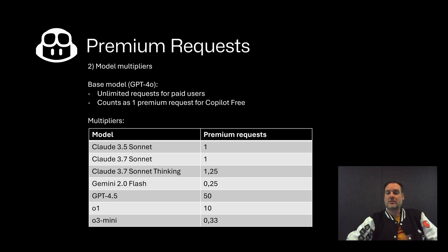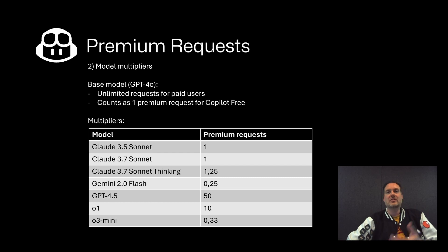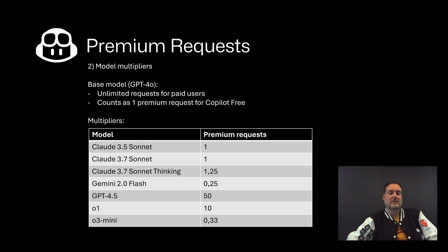The different models have a different multiplier for how they link to premium requests. The base model, GPT-4o, is the standard — if you're paying, you're not limited. Claude 3.5 Sonnet or 3.7 Sonnet count as a single premium request. In Copilot Business you get 300 of those per user per month. GPT-4.5, the newest model, actually counts as a 50x multiplier against the base model.